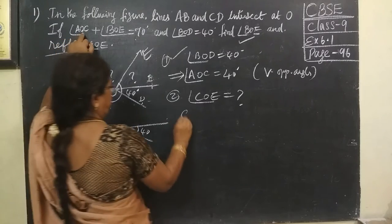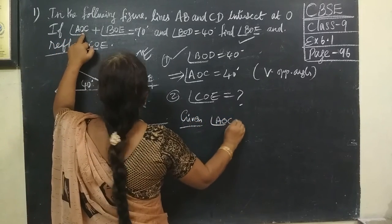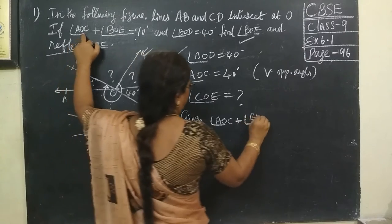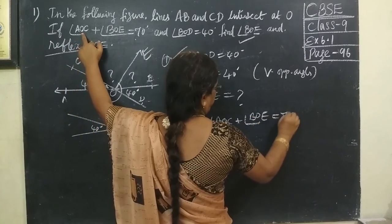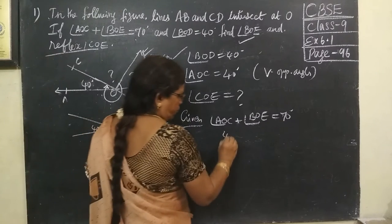What is given? Here it is given. AOC plus BOE equal to 70 degrees. Already we know AOC. AOC is 40.